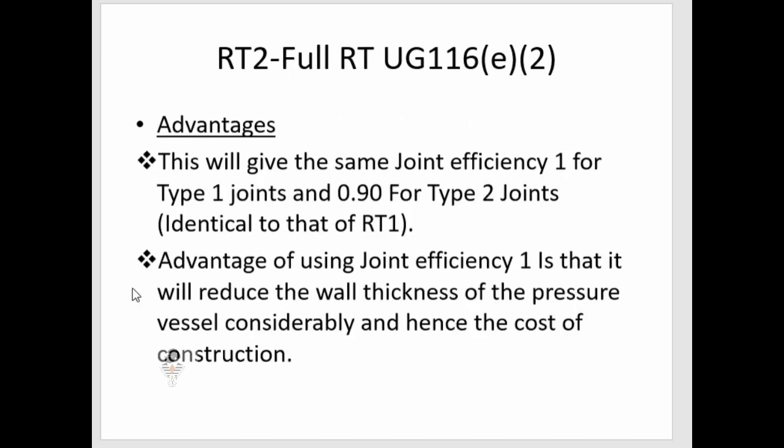The main advantage of RT2 is that it gives the same joint efficiency of 1 for Type 1 joints, which is identical to RT1. Using joint efficiency 1 allows us to considerably reduce the wall thickness of the pressure vessel, saving money in construction.